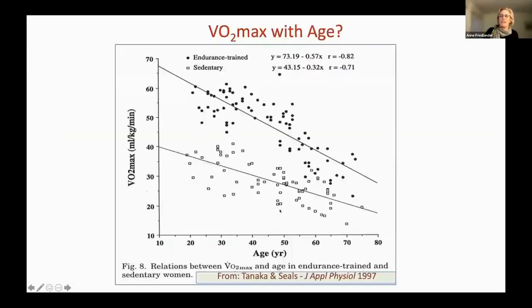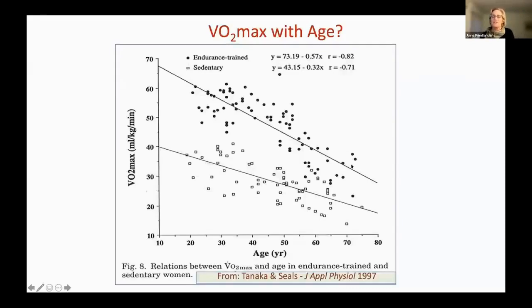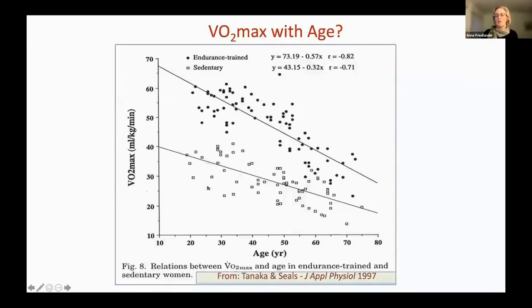Here is a figure looking at endurance-trained women and sedentary women across the lifespan — a cross-sectional study. VO2 max is on the vertical axis and age on the horizontal. The first thing you probably notice is that both curves decline over time, so VO2 max falls with age. But there's also a lot of variability at every age — this 70-year-old has a VO2 max higher than this 25-year-old.